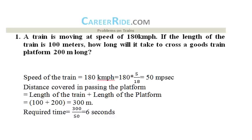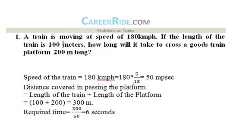First question: A train is moving at a speed of 180 kilometers per hour. If the length of the train is 100 meters, how long will it take to cross a platform 200 meters long? The speed of the train is given as 180 kilometers per hour. Since everything else is in meters, we convert 180 km/h into meters per second by multiplying by 5/18.